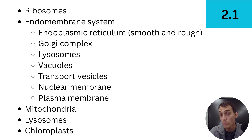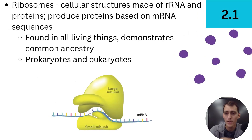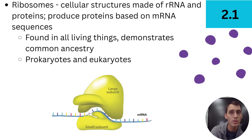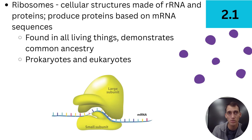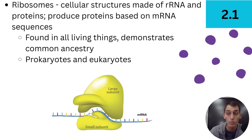Let's begin with the thing that literally all living things have: ribosomes. They're tiny structures — if you see little dots speckled throughout a cell diagram, those are probably ribosomes. They're made of rRNA, which stands for ribosomal RNA, and proteins. Ribosomes' job is to produce proteins based on mRNA sequences. The nucleus sends out mRNA to the ribosomes and says to put together amino acids based on that mRNA sequence — that's called translation, which we'll cover in detail in Unit 6.